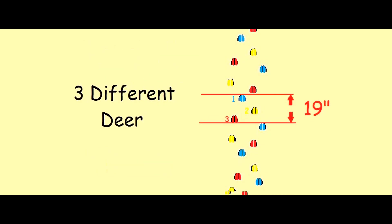Now count the number of tracks that are in between the two lines. In this example, we have three tracks in between the two lines. That means three different deer. We've shown them here in different colors so you can distinguish the individuals. Now this only works if they are in direct register and showing that diagonal walking pattern.